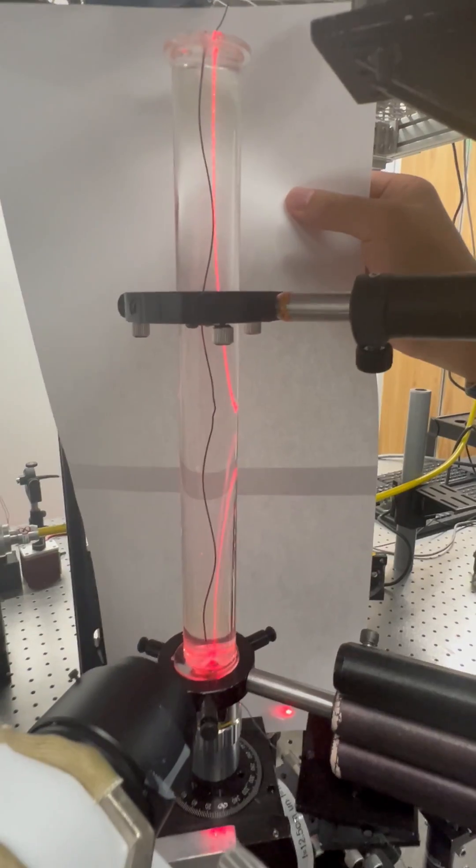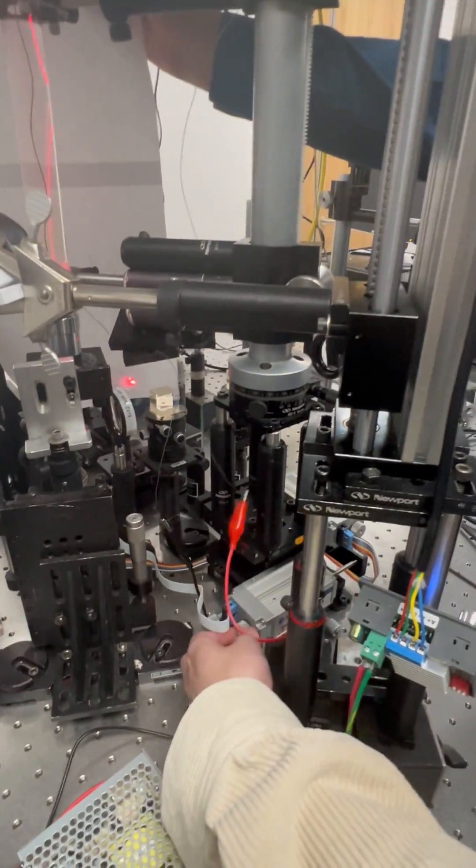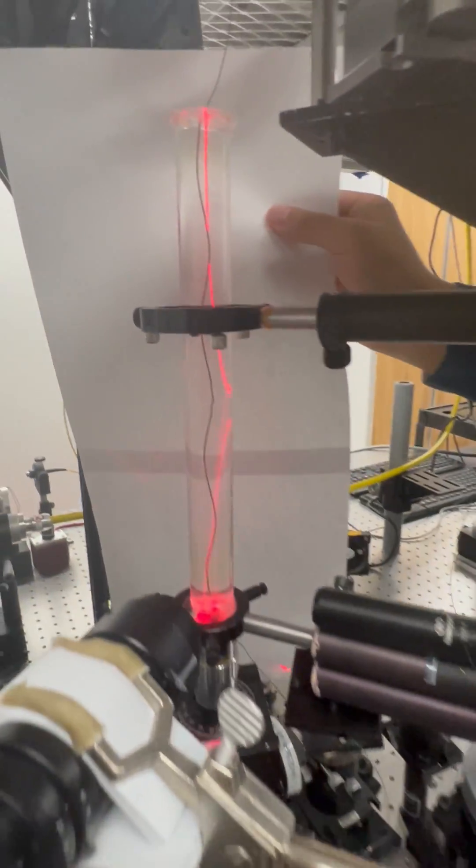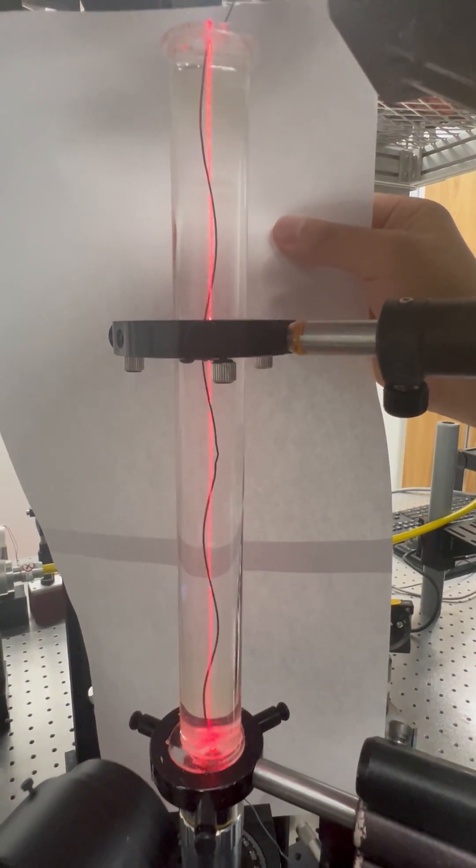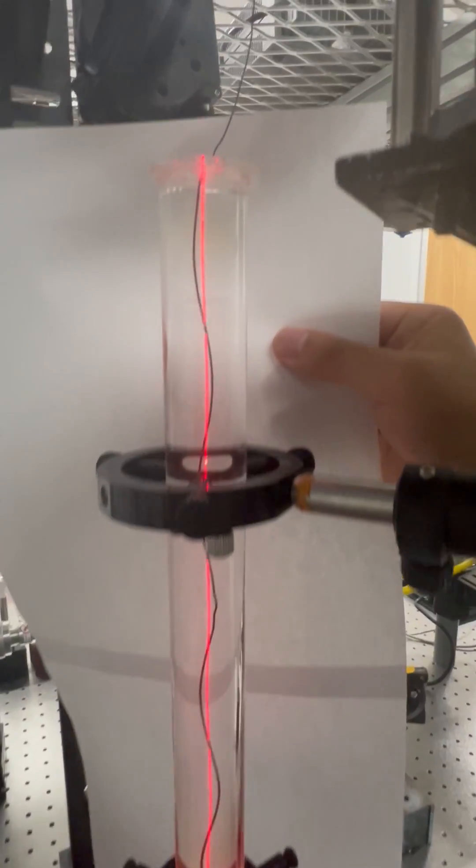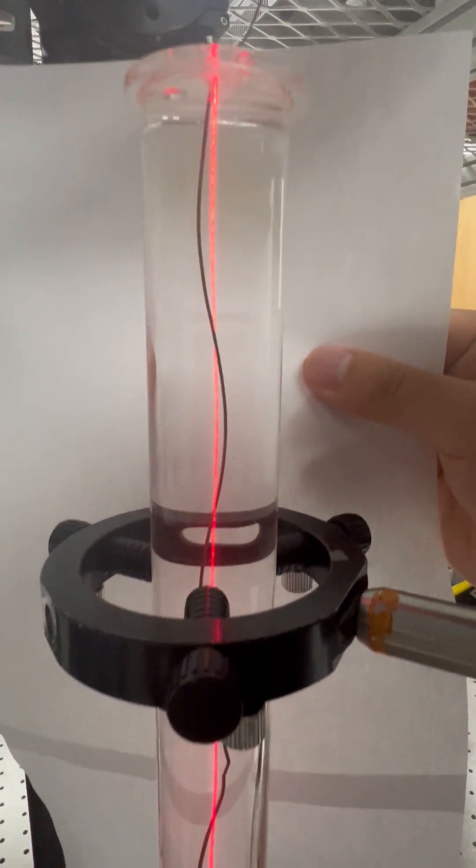But as Yan-Shuan moves the tube, the laser beam enters the Lagrange point and it becomes completely guided. Interestingly, the guiding is also on a helical trajectory.